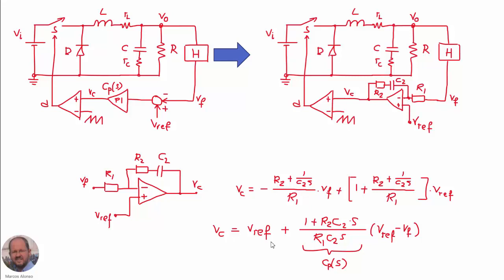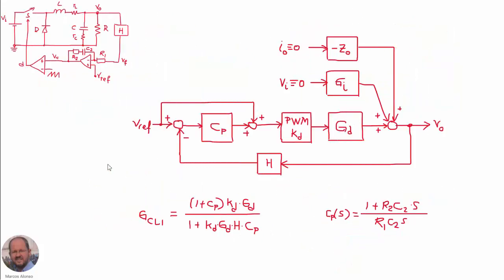Let's analyze this further. Here we have the implementation using the PI compensator with the operational amplifier — this is the real block diagram of the converter in closed loop. We have the Vref being added at the output of the compensator due to the operational amplifier implementation. If we analyze the response of this block diagram, we get an expression that includes the factor (1 + CP), which is different from the implementation using a separate subtractor and PI compensator.